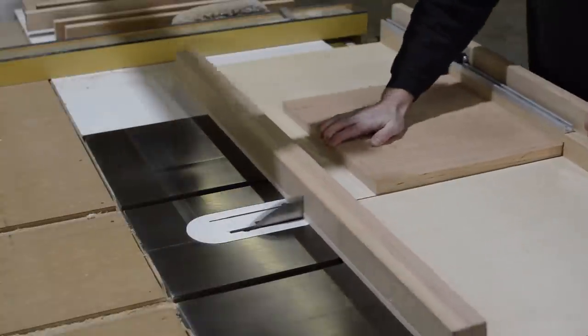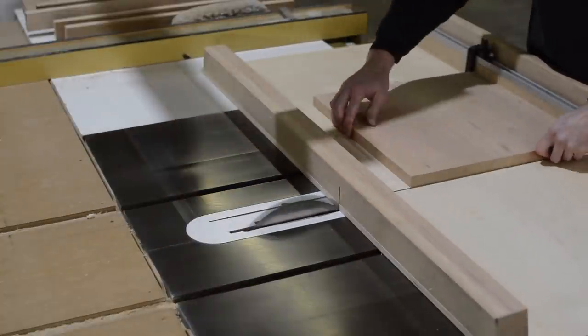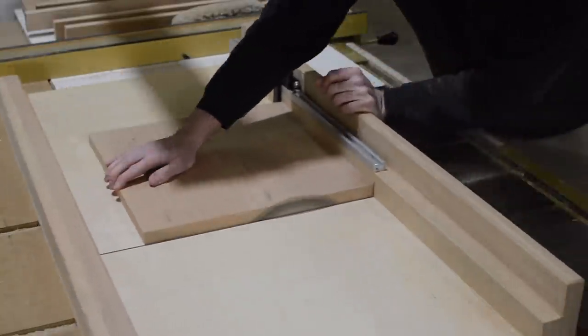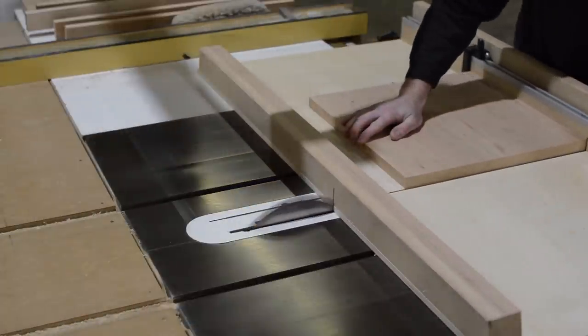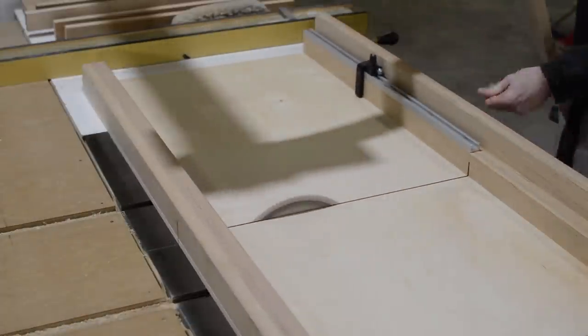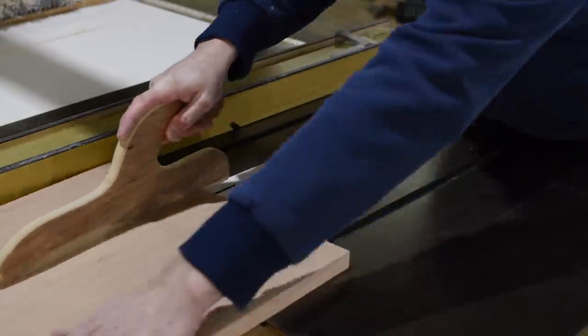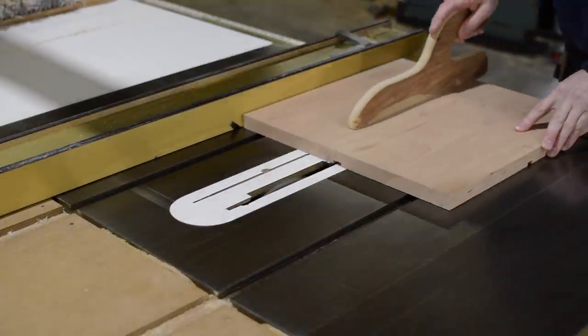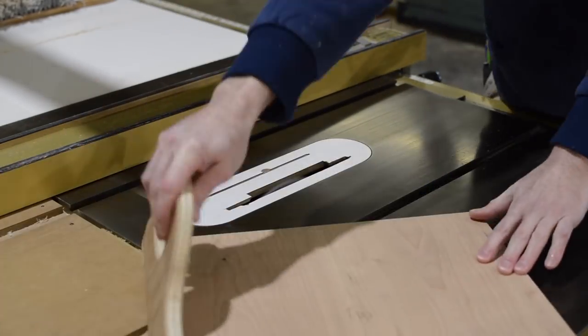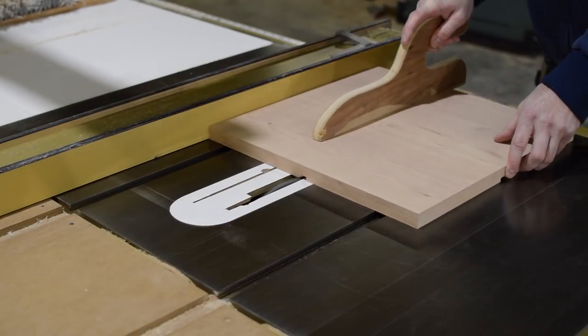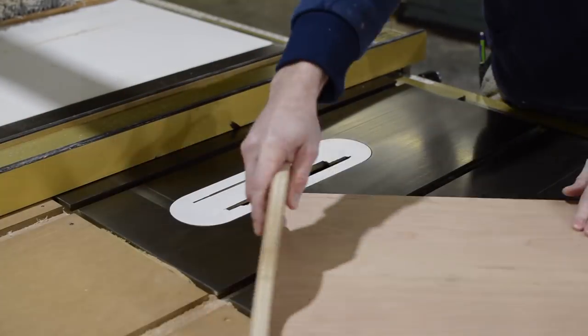Then it's over to the table saw where I make it perfectly square. Once square, I add a couple of dados to the underside of the top. Make sure to use all four edges as a reference for the dados. This will ensure that they're perfectly centered.